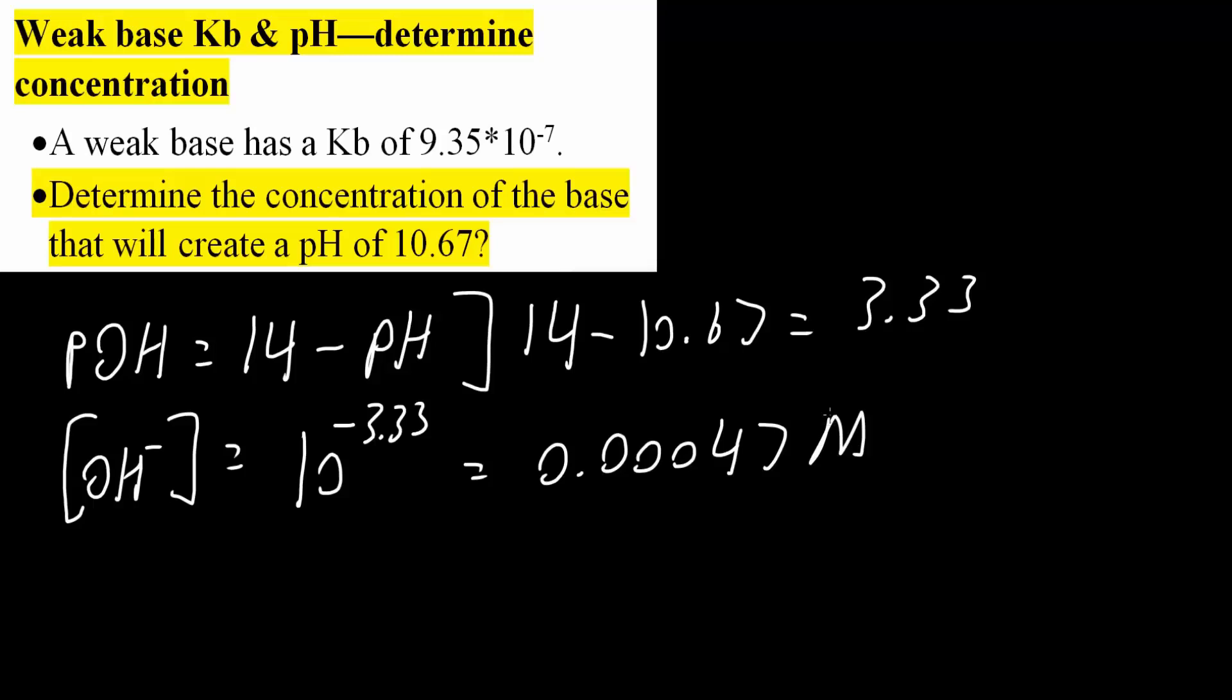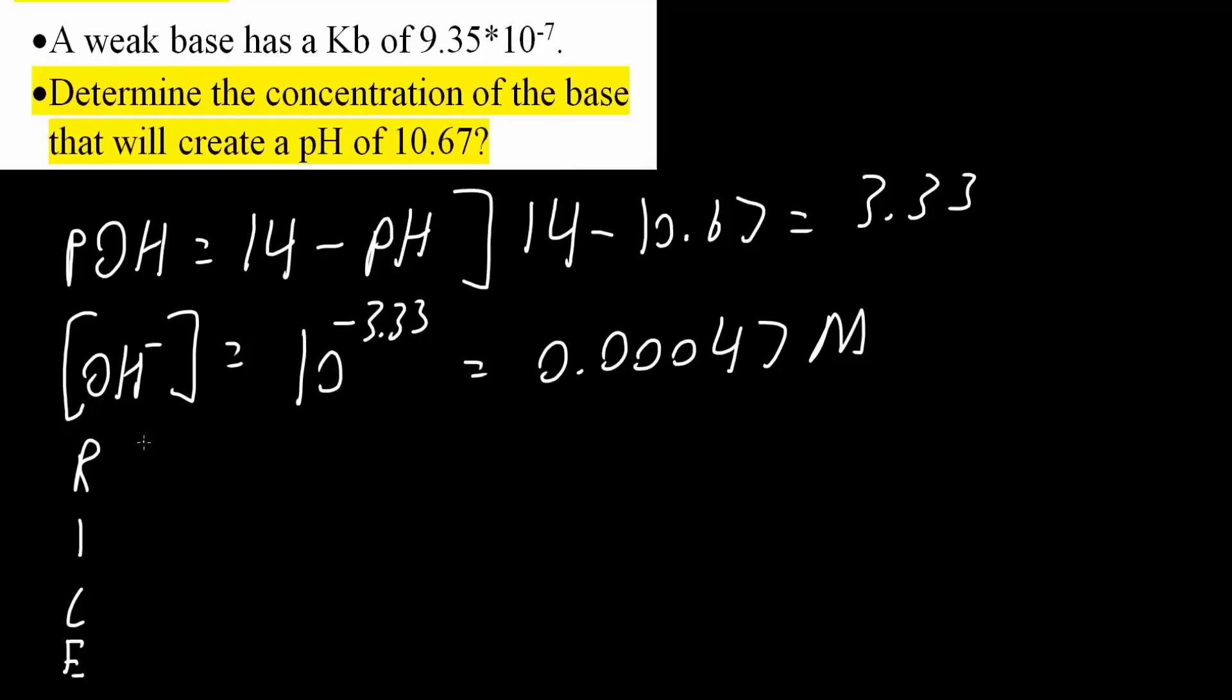From here, we will construct a RICE table. The reaction we have for the weak base is B plus H2O would produce BH plus plus OH minus.